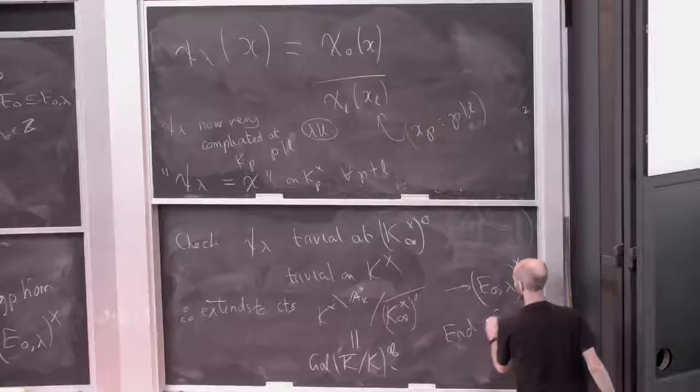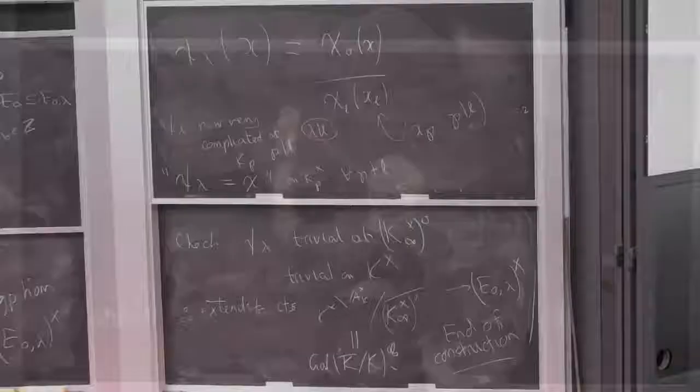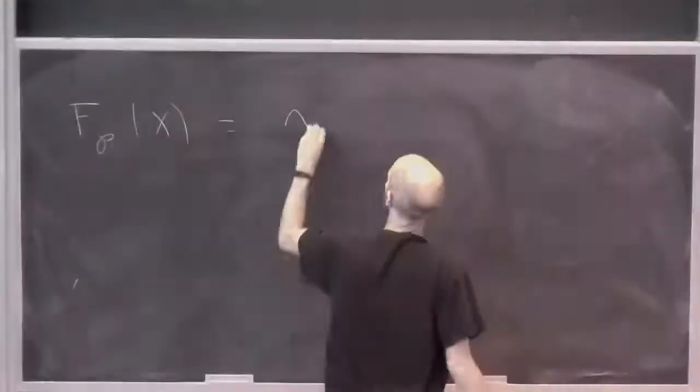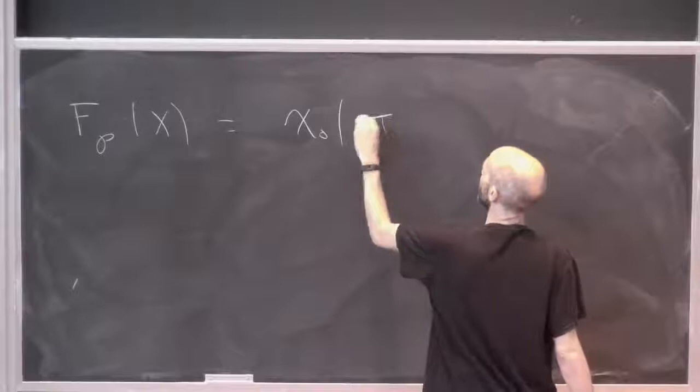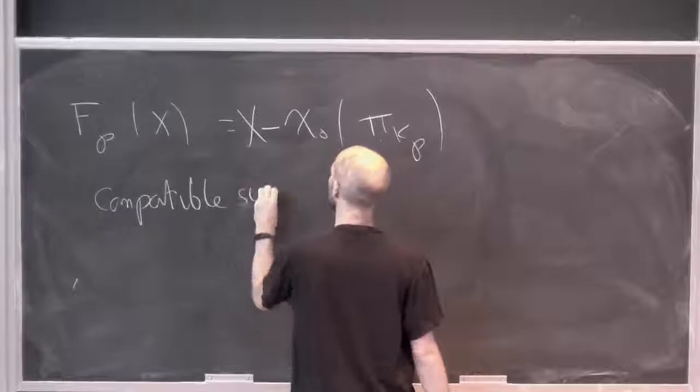You might wonder: f_p(x) is just chi_0 of some local uniformizer at p, giving x minus that. That gives the compatible system. So there's Weil's construction.